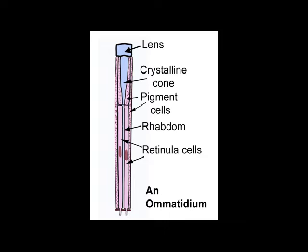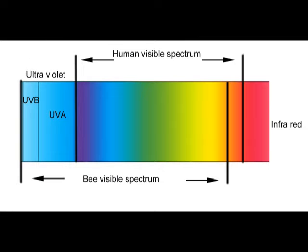Each individual ommatidium is sensitive to the full range of colours within the bee's spectrum. The bee's spectrum is focused on shorter wavelengths than the human eye, so that the bee can see ultraviolet light which we cannot, but cannot really see red that we can. The colour vision of bees is produced by a combination of three specific colour signals, in much the same way as the image on a television screen or in a digital photograph is made entirely from a mixture of three particular colours.